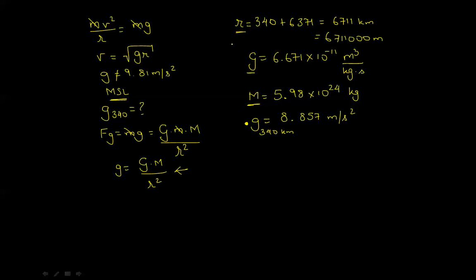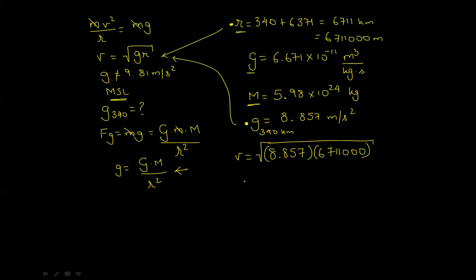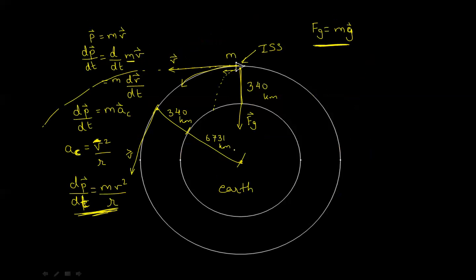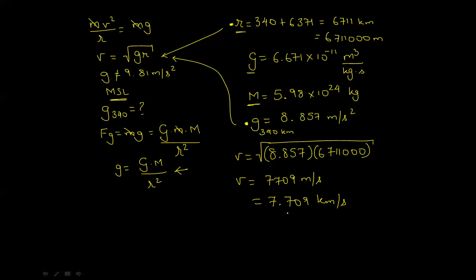Putting g = 8.857 m/s² and r = 6,711,000 m back into the velocity equation, v equals the square root of 8.857 multiplied by 6,711,000, giving v equal to 7,709 meters per second, or 7.709 kilometers per second. So for the ISS to stay in a stable closed orbit at 340 kilometers above mean sea level, it needs a tangential velocity of 7.71 km/s — it is moving really, really fast.